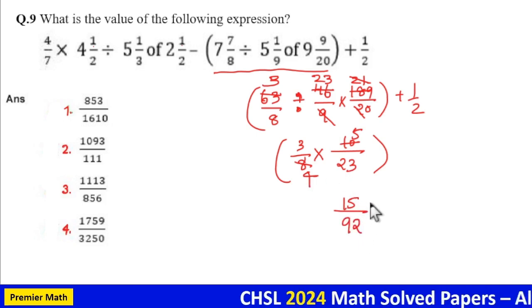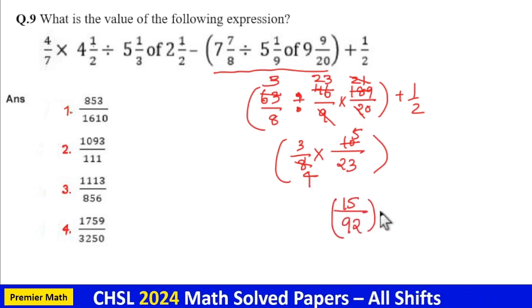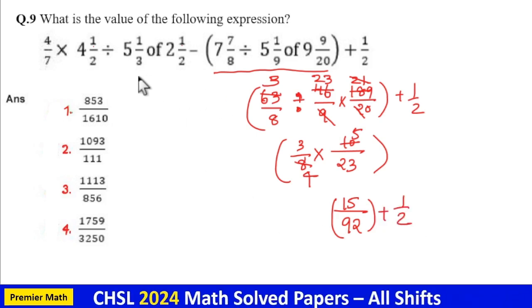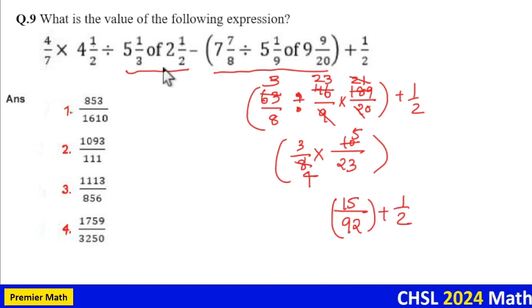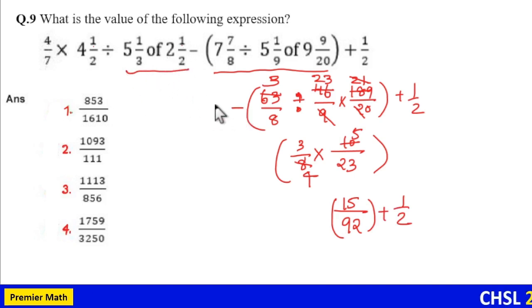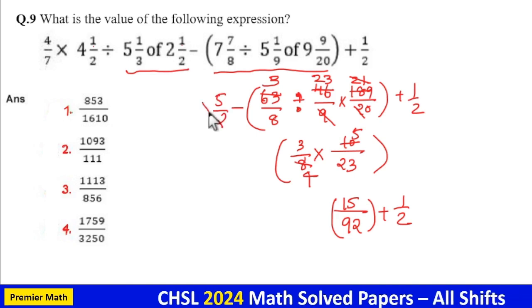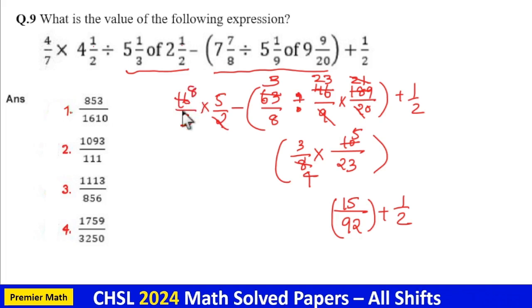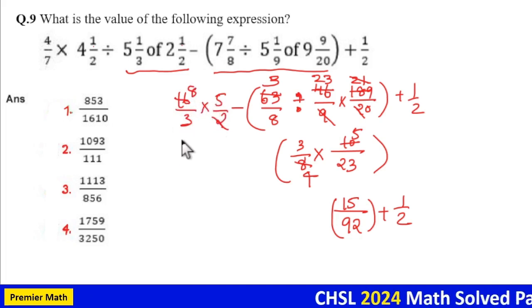So 15 by 4 into 23 means 4 into 20, 80, 4 into 3, 12. So 92. So this bracket will become 15 by 92. So remaining plus 1 by 2 here. So this is equal to 2 into 4 plus 1, 5 by 2 into 5 into 3 plus 1, 16 by 3. Now 2 goes 8 times in 60. So this will become 40 by 3.